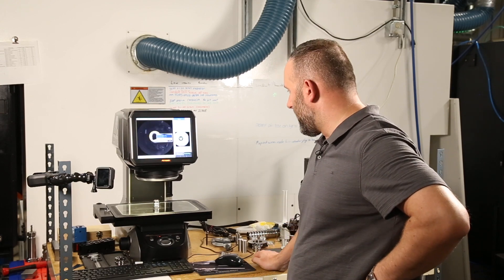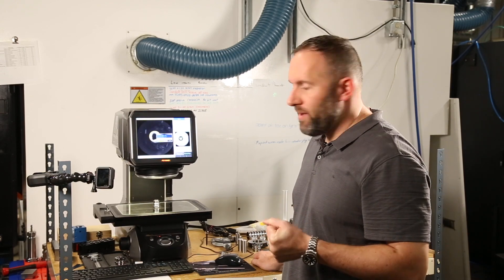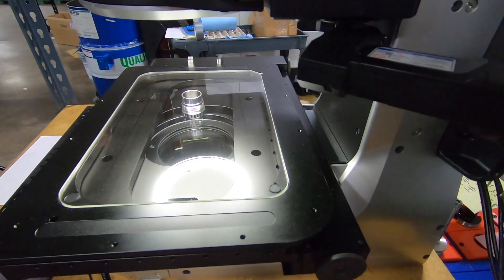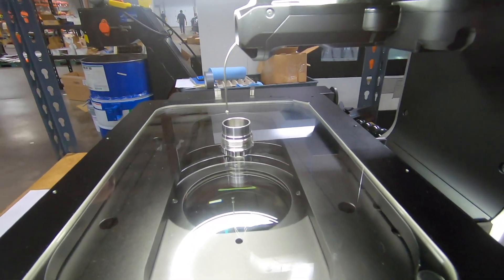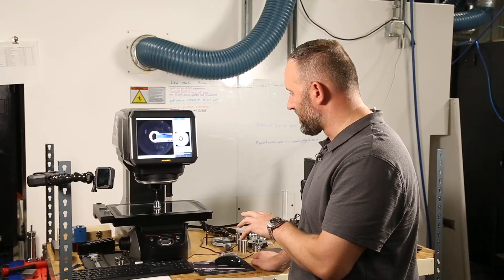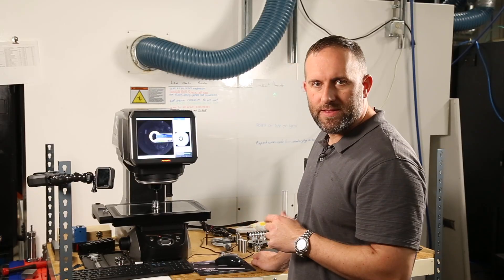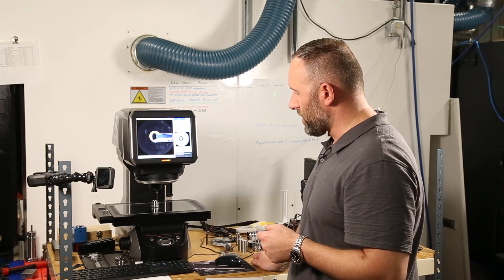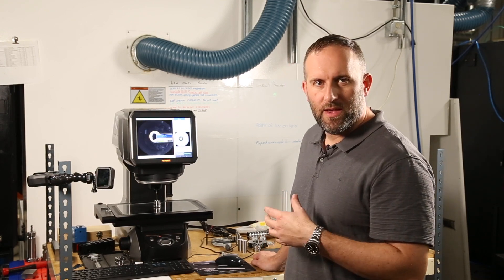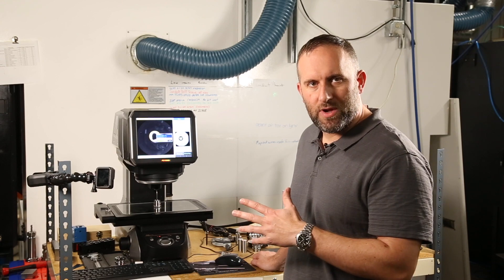And this will actually deploy what they call the light probe. This probe uses about the weight of a postage stamp of force and actually physically touches things, but it uses the light for guidance I believe. And this allows us to measure with great accuracy things that the camera has a little bit of difficulty seeing.